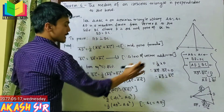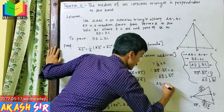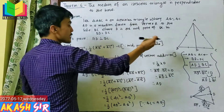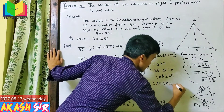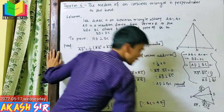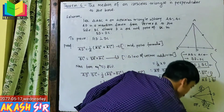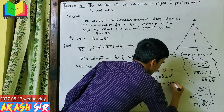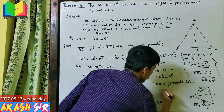Therefore AD vector is perpendicular to BC vector. Thus the median AD of the isosceles triangle is perpendicular to the base BC. Proved.